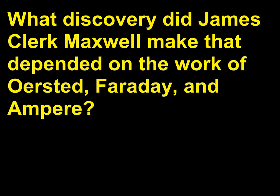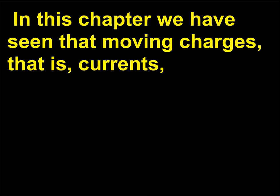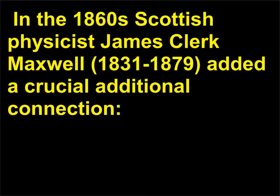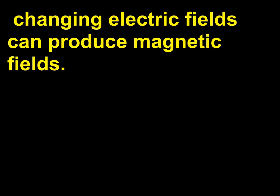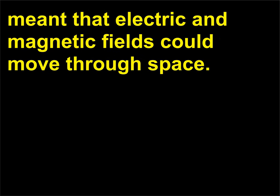What discovery did James Clerk Maxwell make that depended on the work of Ørsted, Faraday, and Ampere? In an earlier chapter we have seen that charges create electric fields. In this chapter we have seen that moving charges — that is, currents — create magnetic fields, and that changing magnetic fields produce electric fields. In the 1860s, Scottish physicist James Clerk Maxwell (1831–1879) added a crucial additional connection: changing electric fields can produce magnetic fields. With that idea, Maxwell recognized that these relationships meant that electric and magnetic fields could move through space.